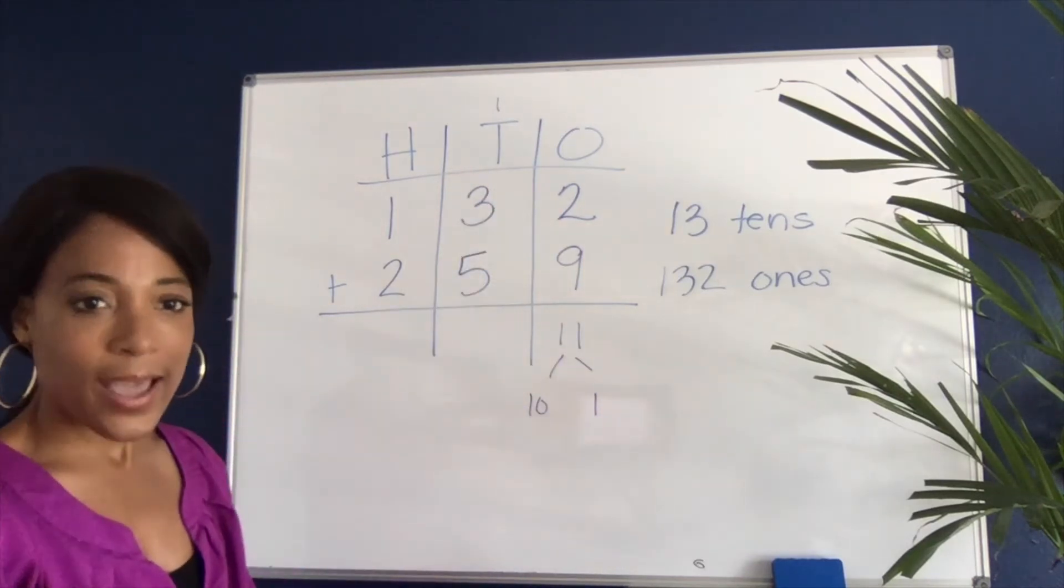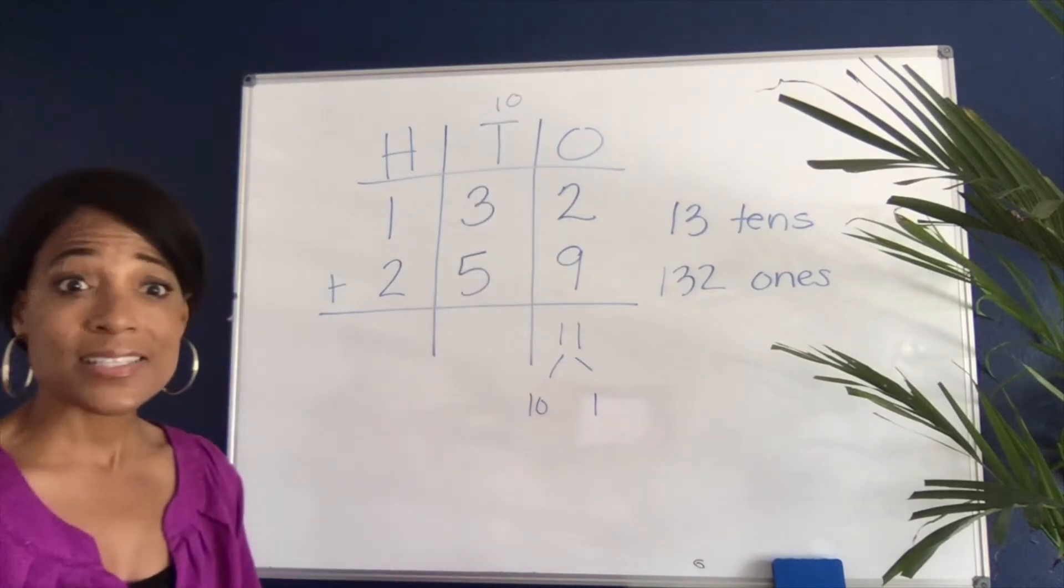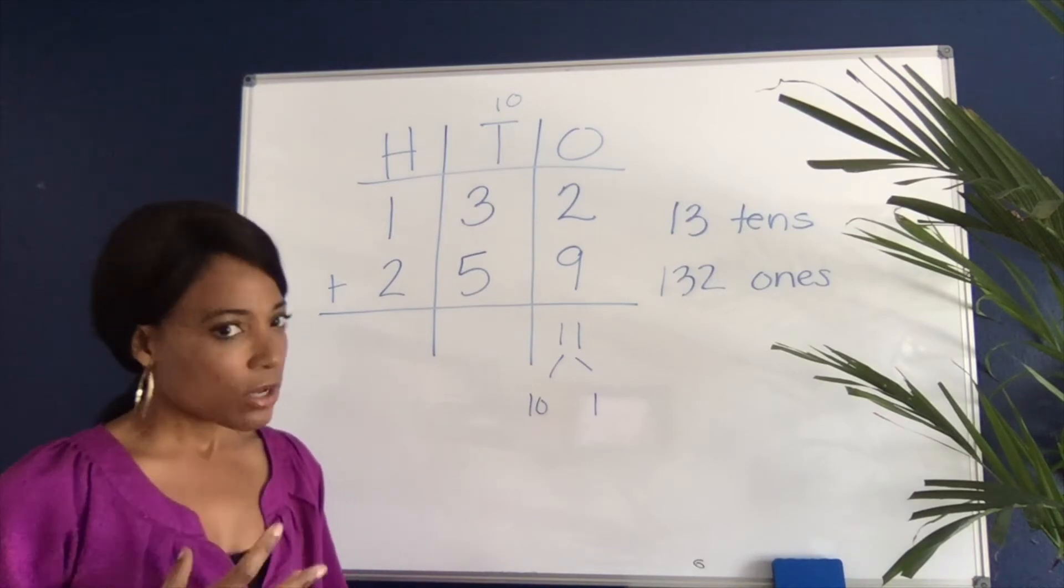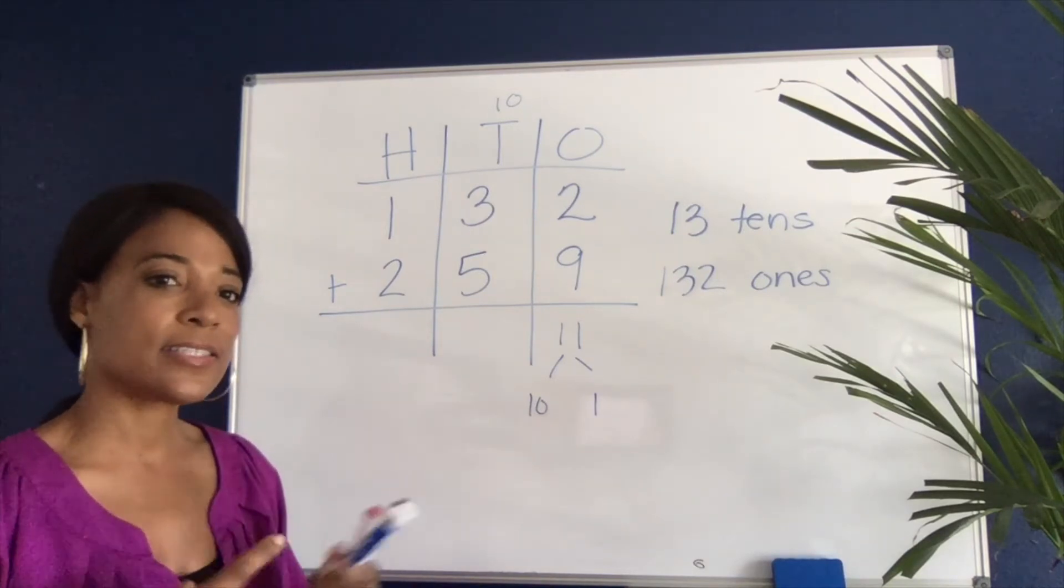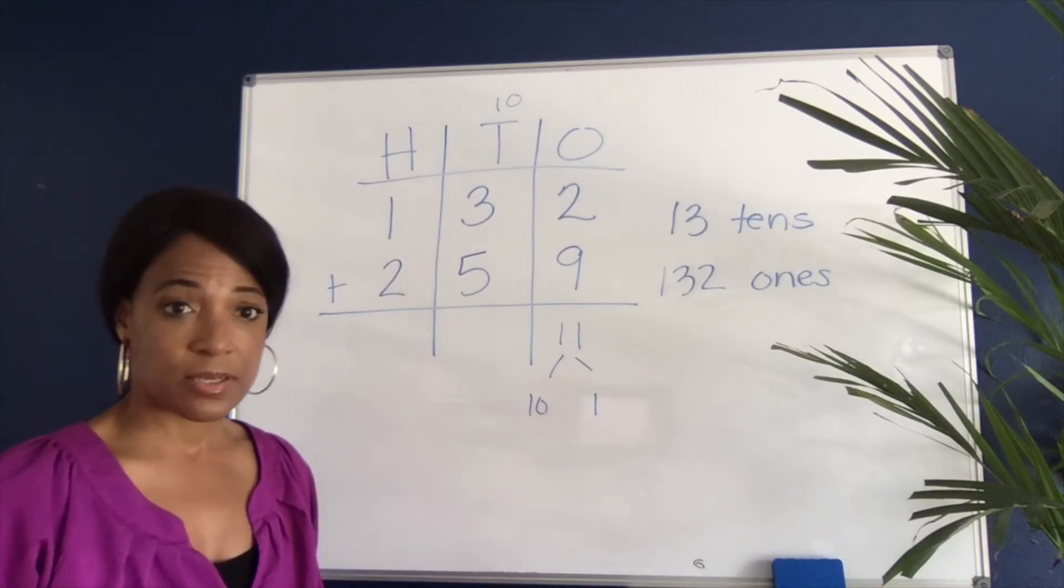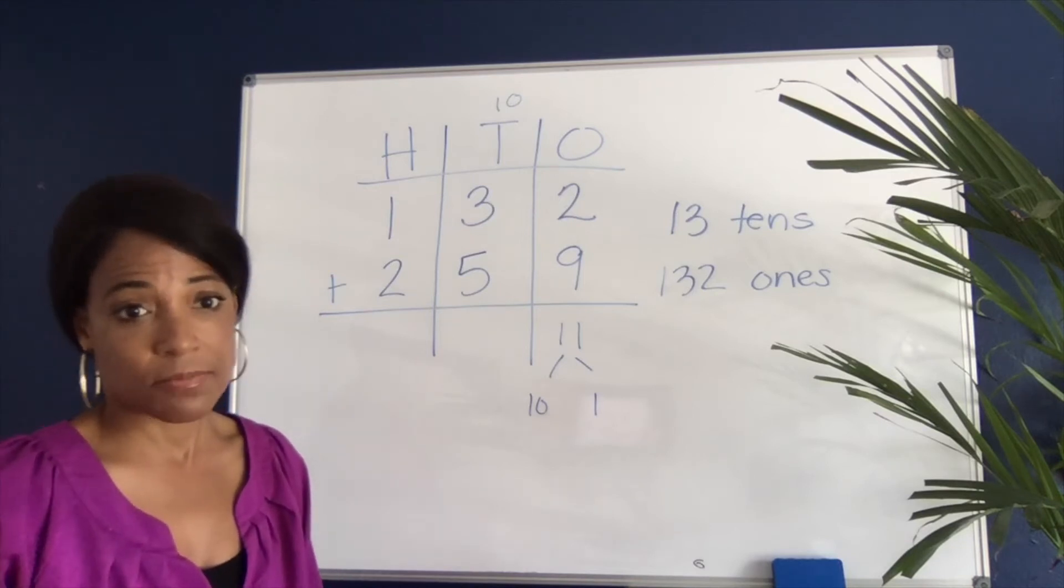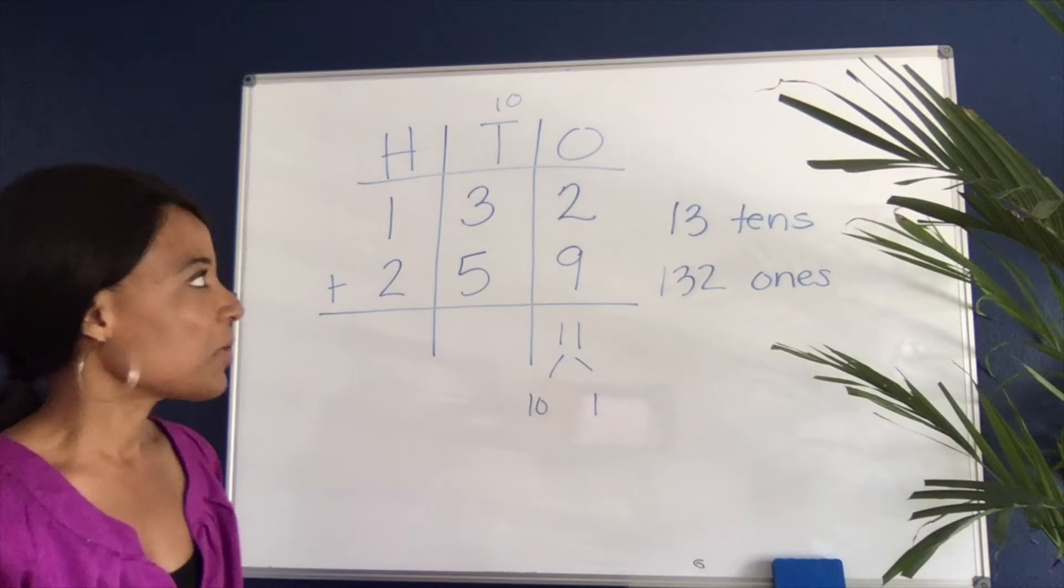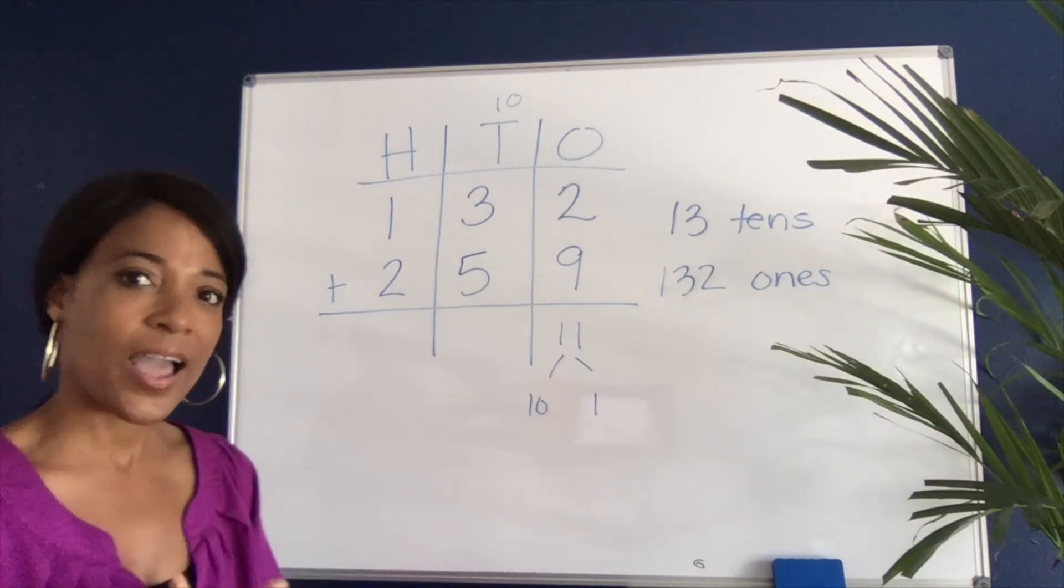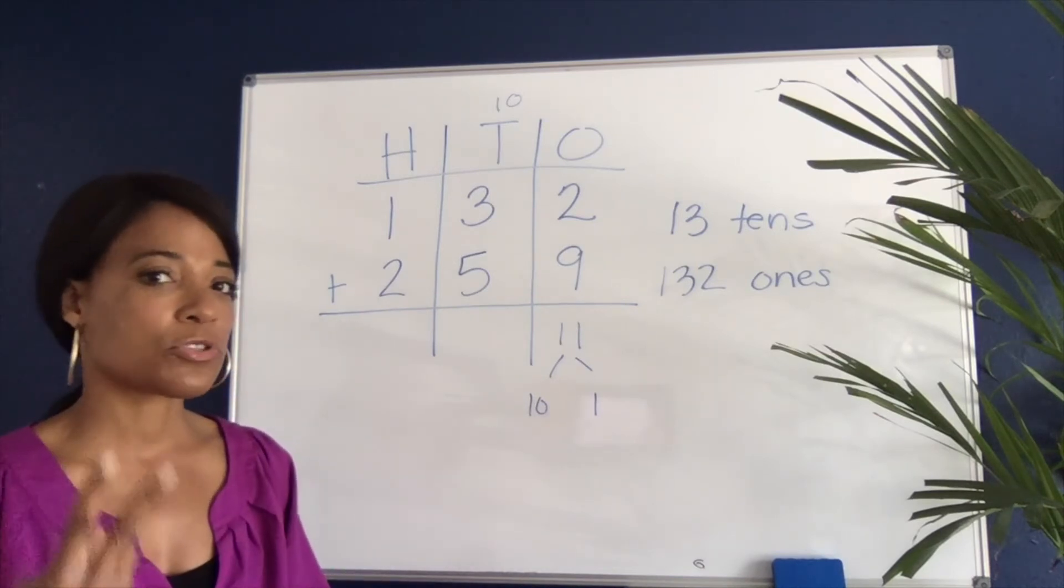So when we ask them to carry a one, we're really asking them to carry a 10, but it's invisible. Although they might say it's a 10, they don't actually get a lot of practice dealing with those groups of 10, which are fundamental in working with our number system. Because kids learn all of these procedures that make it quick and efficient and hide a lot of the math, we don't want to hide the math—we want to bring it forward. That's reason number two.